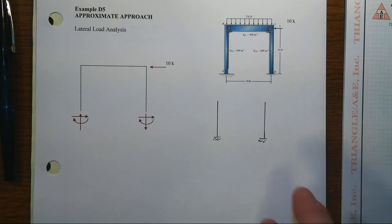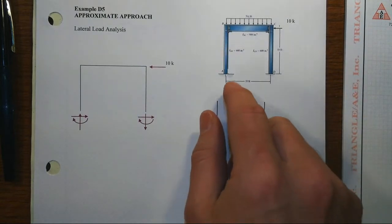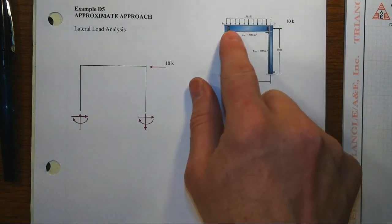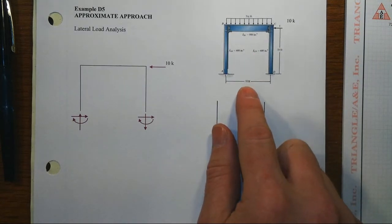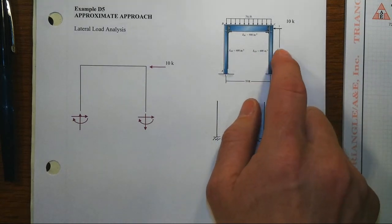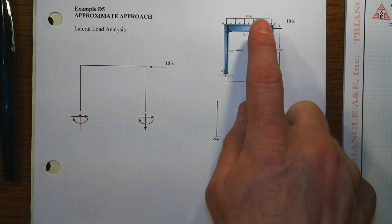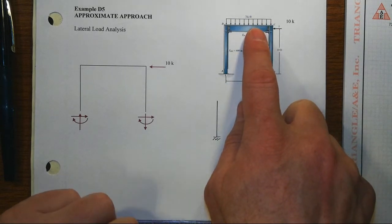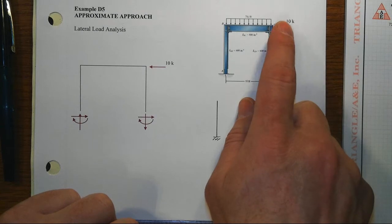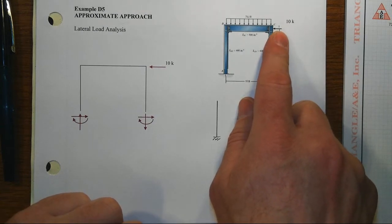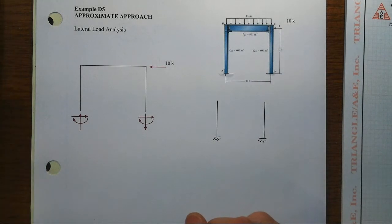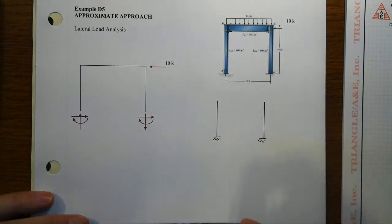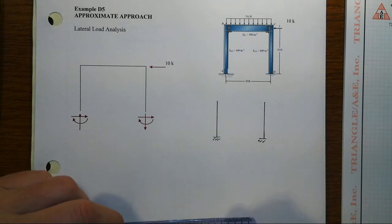In this example we're going to look at a single story single bay portal frame that is a moment resisting frame with rigid joints. This one also has fixed ends at the base, 10 foot width, 10 foot height. Although it has a gravity load of 3 kips per foot applied to the beam, we're going to focus only on the 10 kip lateral load in this lateral load analysis. There's a companion video that looks separately at the gravity load effects on this portal frame.